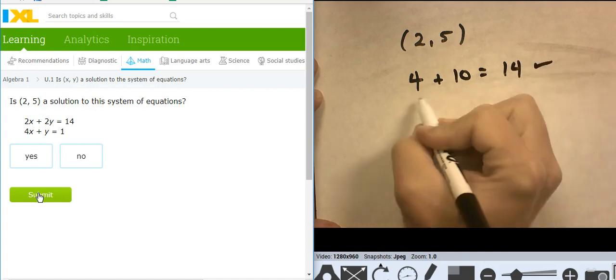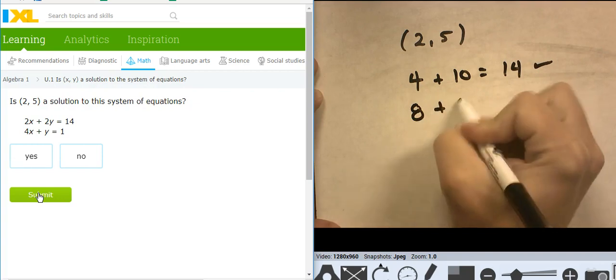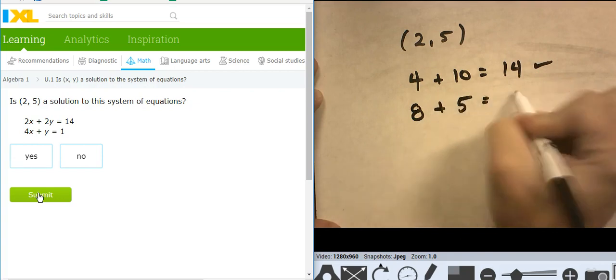Let's try the next one. 4x, which is 8, plus y, which is 5, equals 1. That did not work. So that's a no.